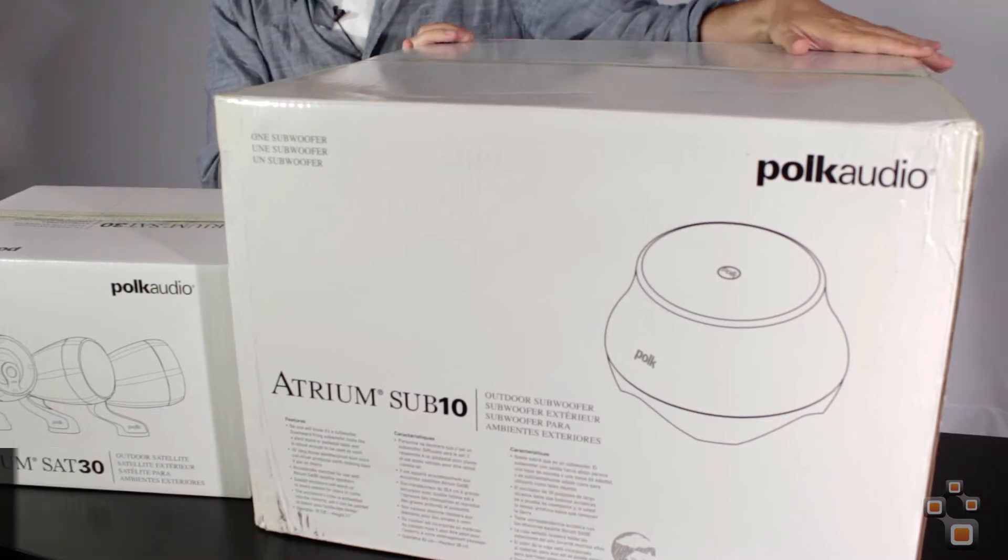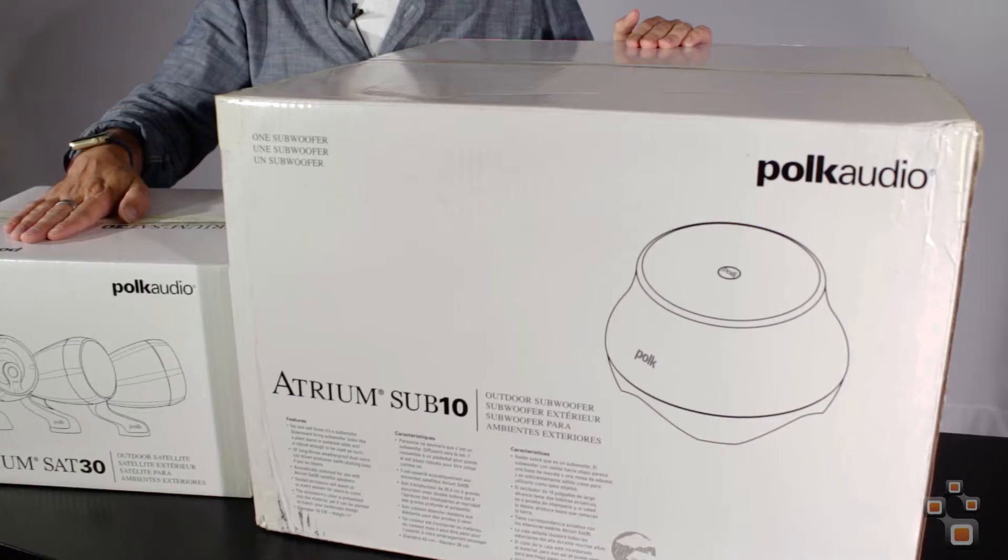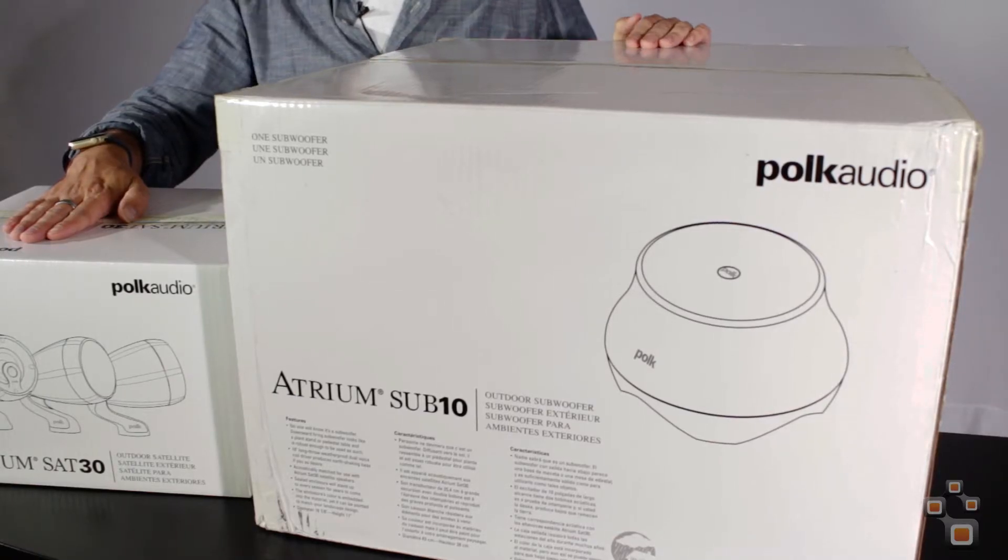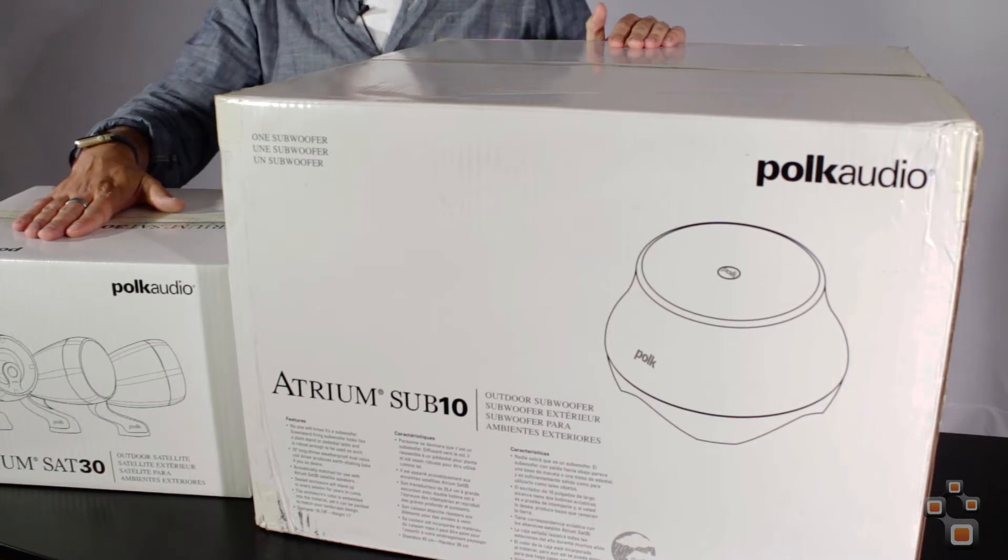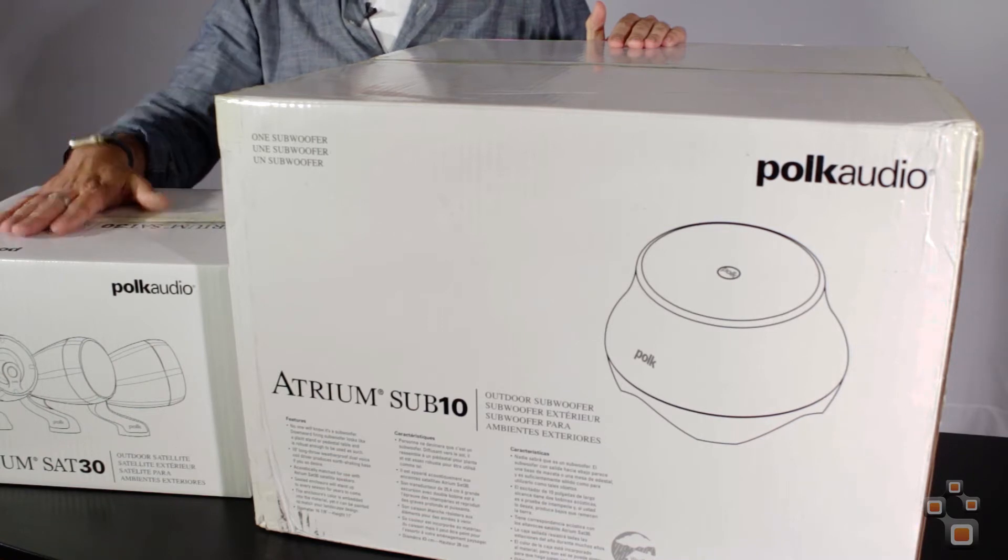I'm Toby from CyberMarkets. This is the Polk Sub-10, a passive outdoor subwoofer, and this is the SAT-30, all part of the Polk range of Atrium outdoor speakers. It's a satellite speaker. Usually use these in pairs, but for the unboxing we're just going to have a look at one. But first of all, we're going to look at the Sub-10.